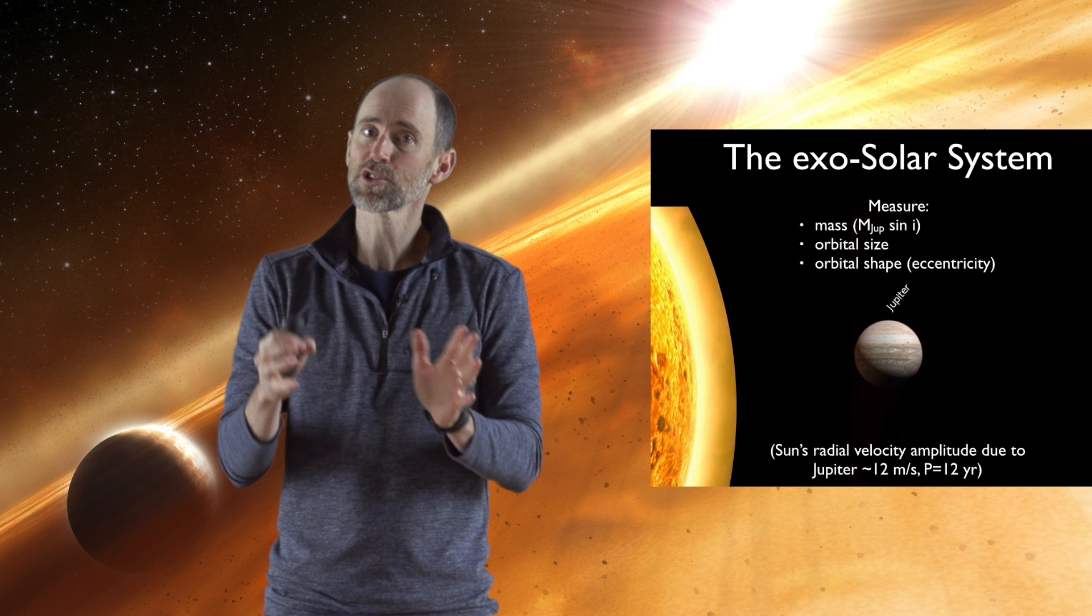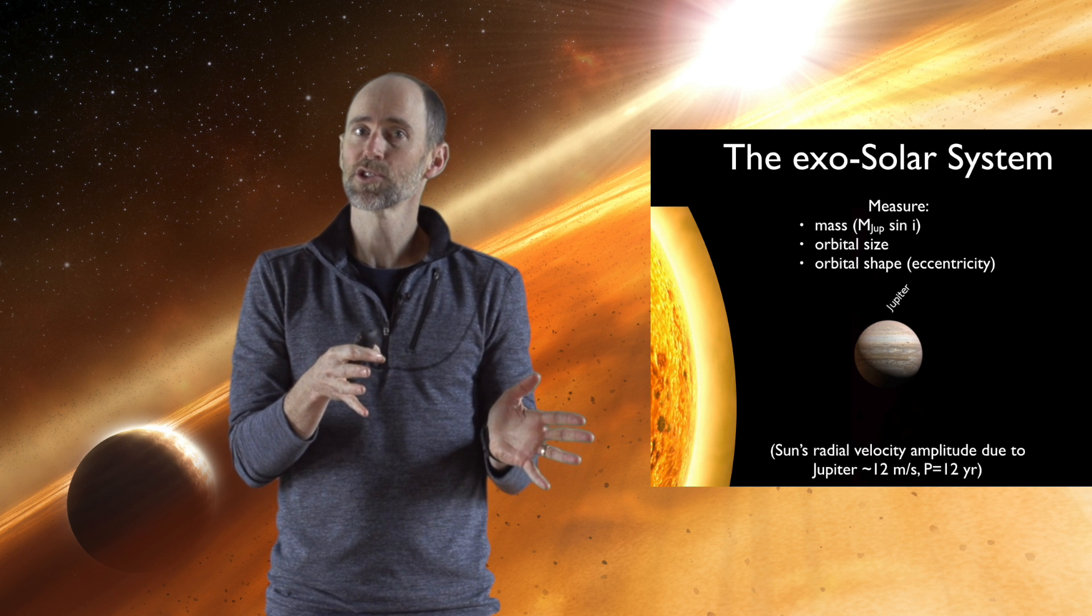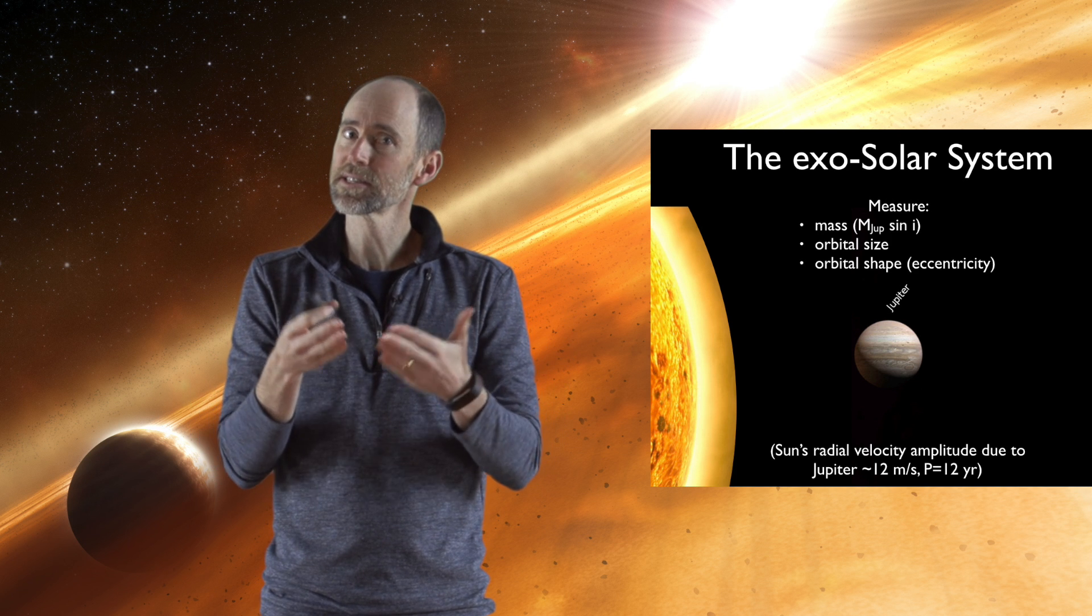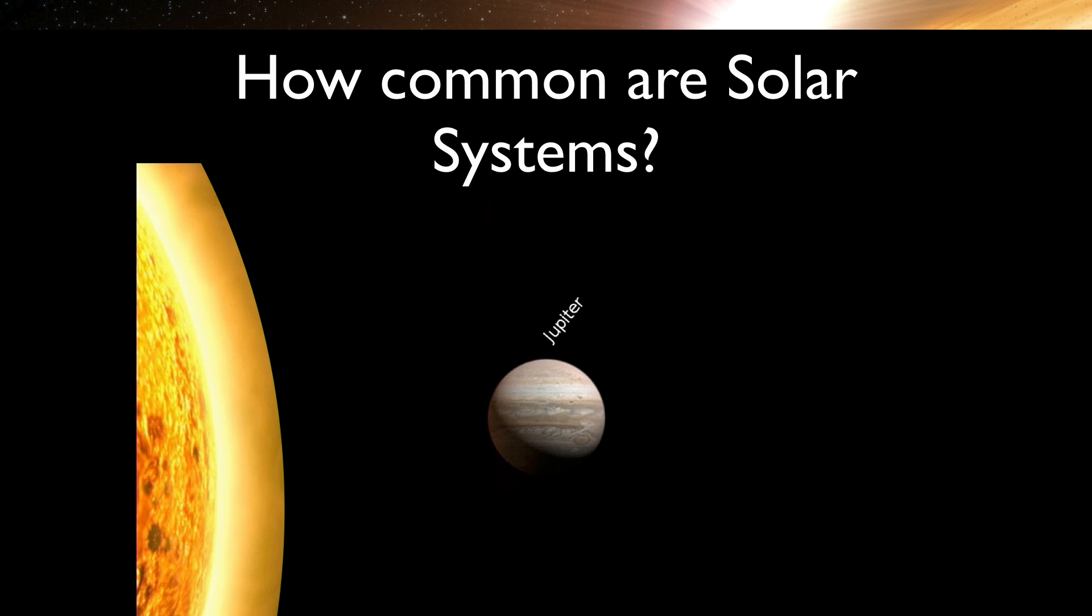So the search for other solar systems for now is a search for Sun-Jupiter systems. Yet among the known planets, we can still ask the question, how common are Sun-Jupiter systems?